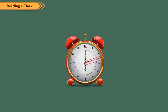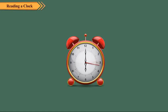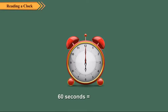It has three hands. The longest hand is called the second hand. It moves the fastest. It completes one round of the dial in 60 seconds or 1 minute. So, 60 seconds is equal to 1 minute.